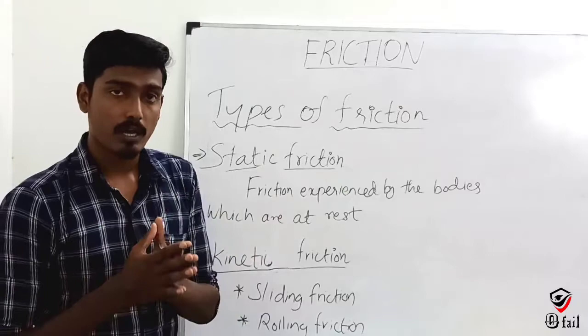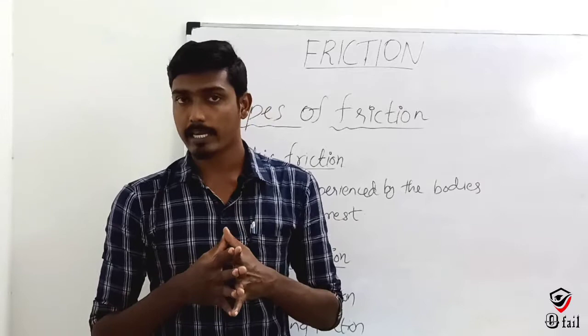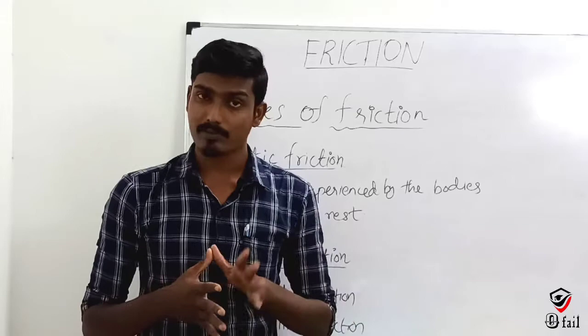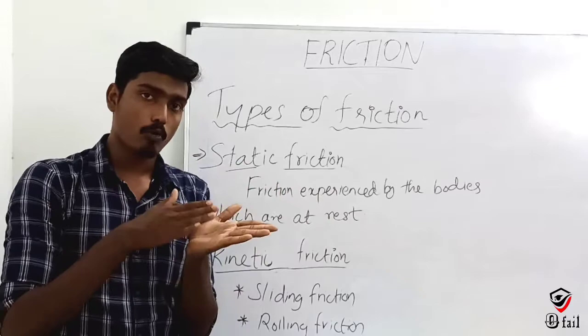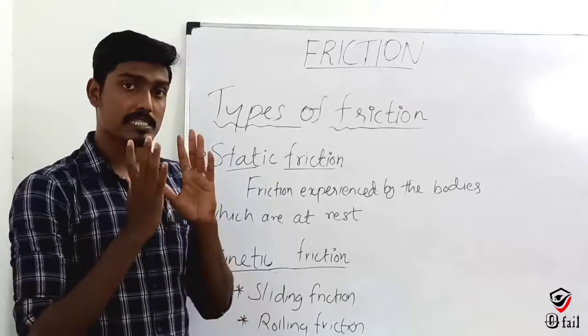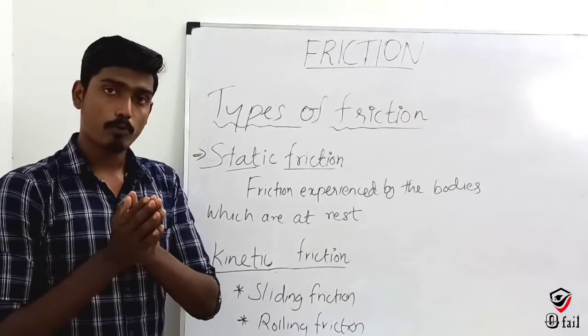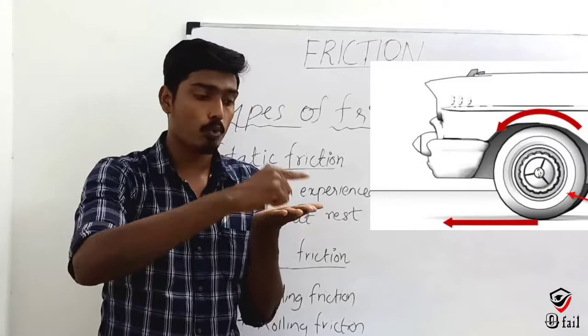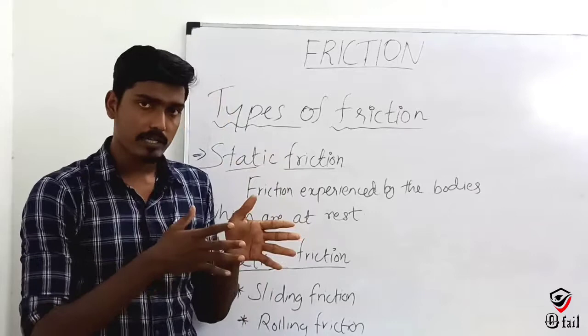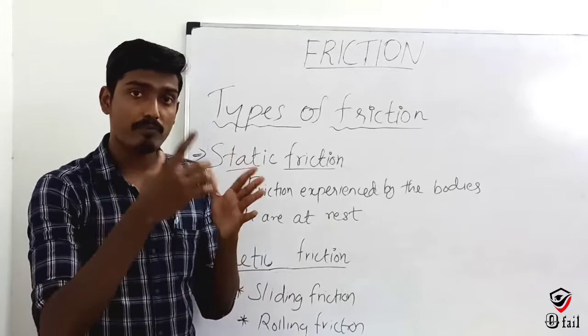Kinetic friction — kinetic means motion. When the body is in motion, the friction is called kinetic friction. Kinetic friction is further divided into two types: sliding friction and rolling friction. Sliding friction occurs when one body slides over another. Rolling friction occurs when a body rolls, for example a car wheel rotating on the ground.